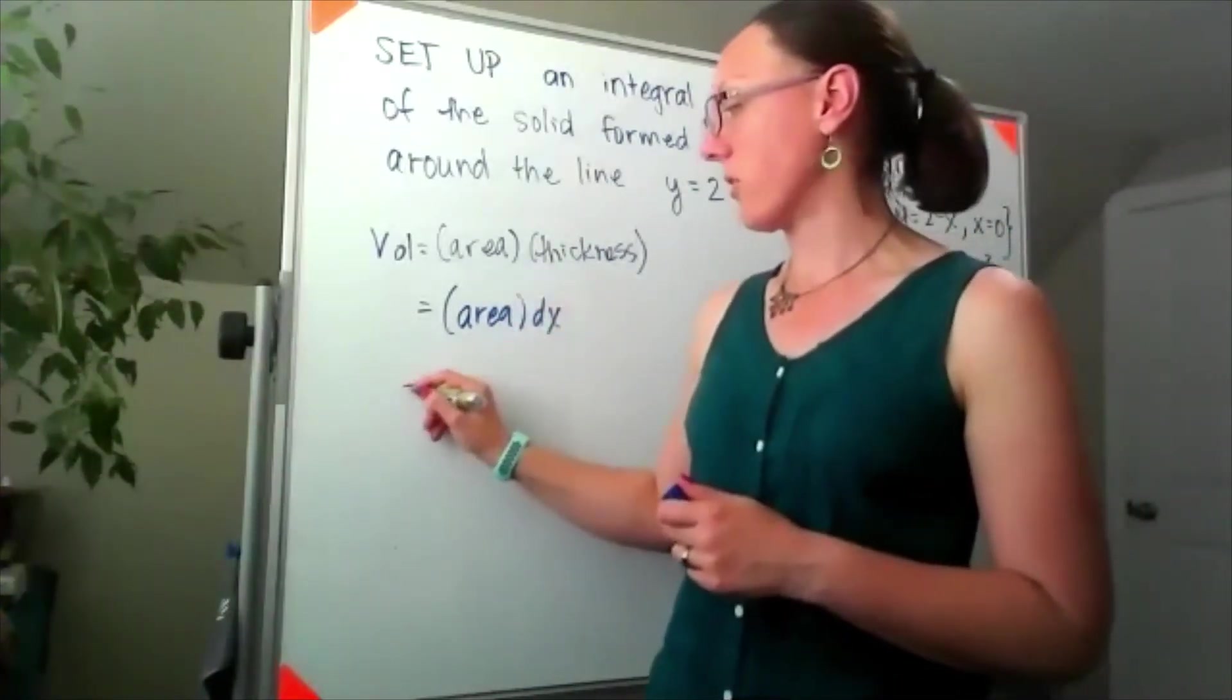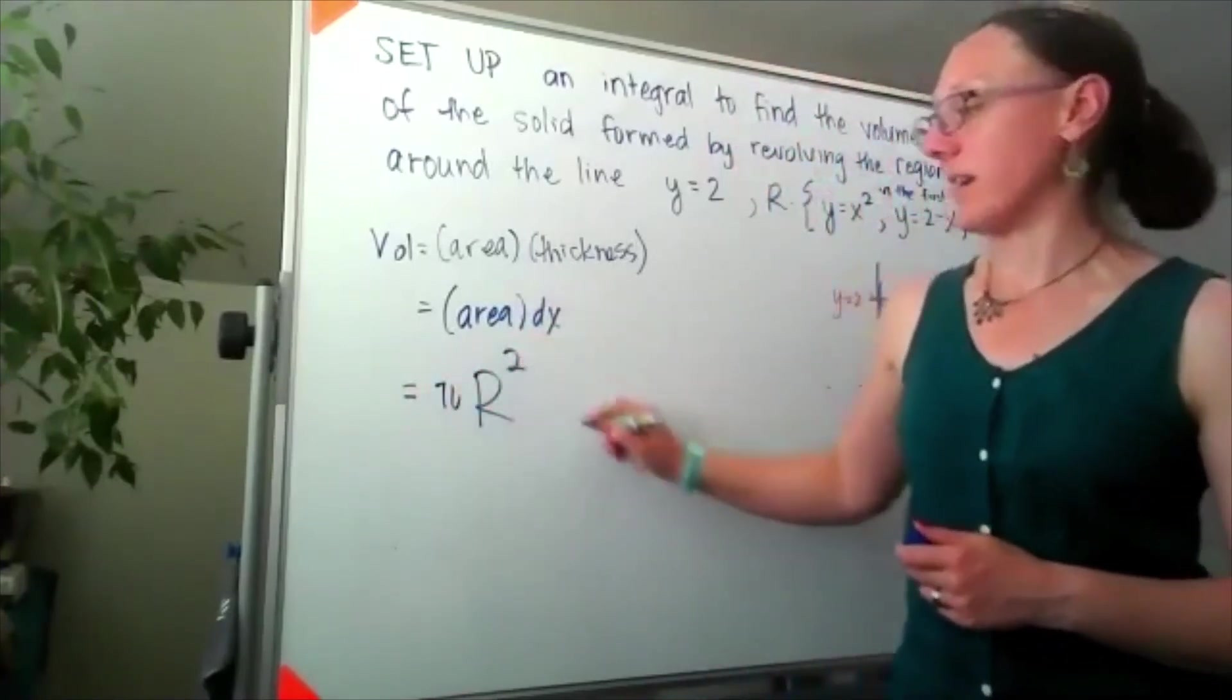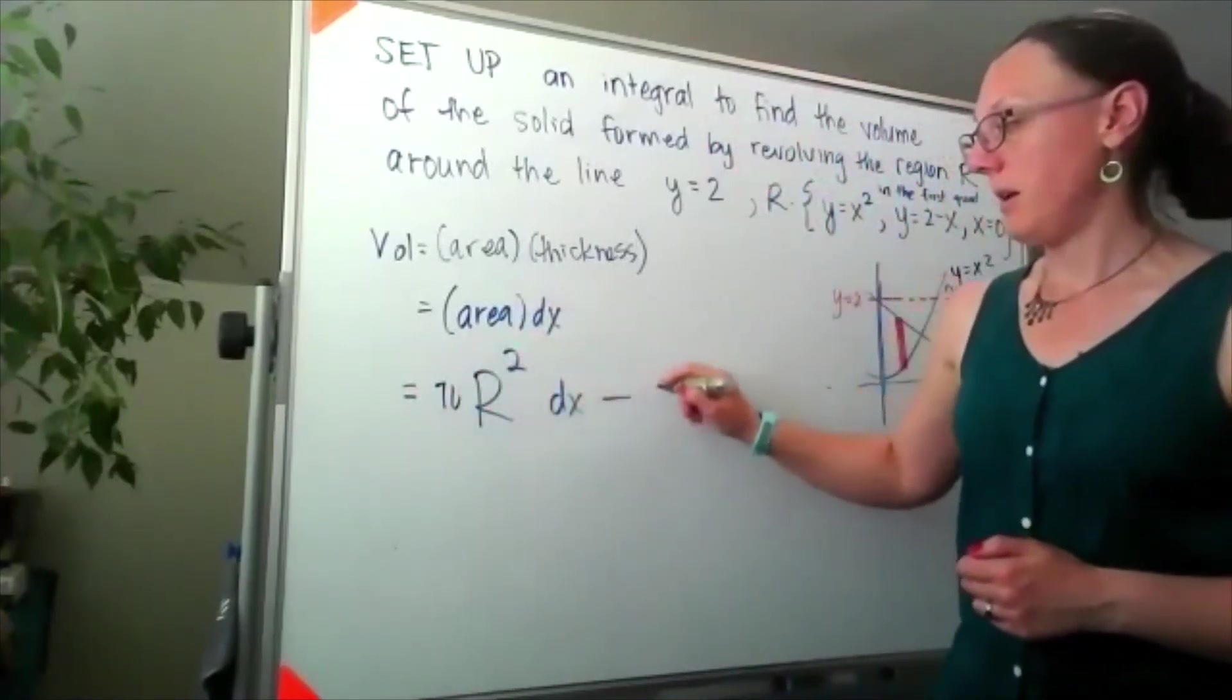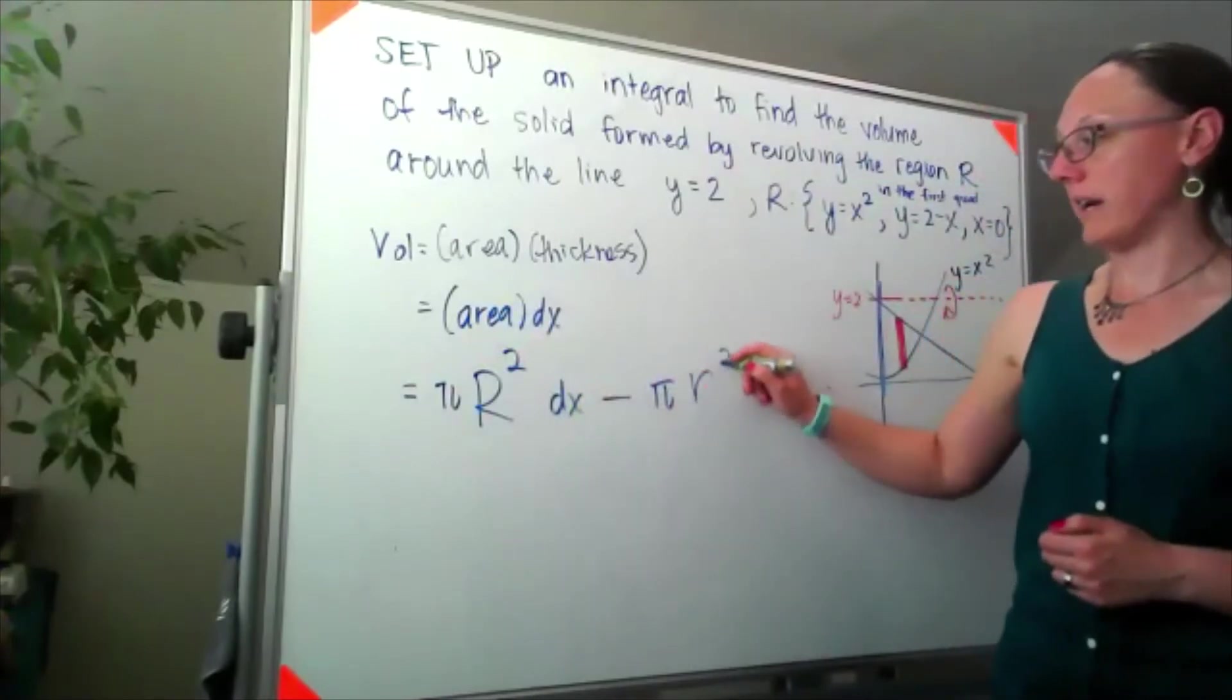My volume is going to look like pi of a big radius squared minus pi of a little radius squared.